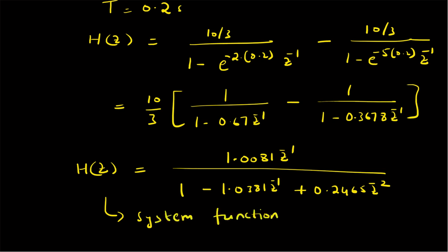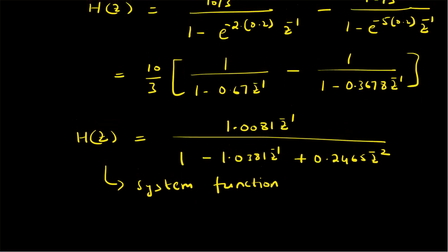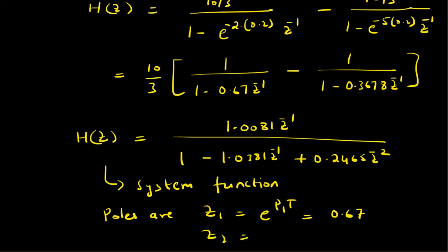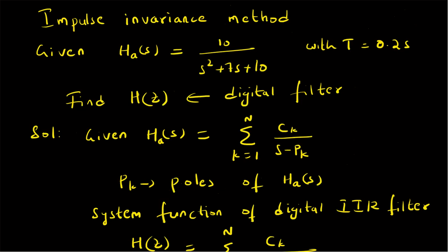Note that the poles of the digital filter are z1 = e^(p1·T) = e^(-0.4) ≈ 0.67 and z2 = e^(p2·T) = e^(-5×0.2) = e^(-1) ≈ 0.3678. Both poles are inside the unit circle, confirming stability.